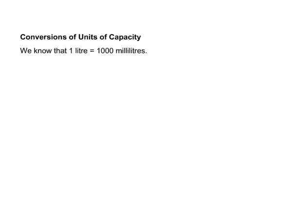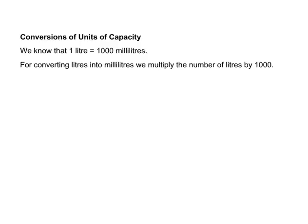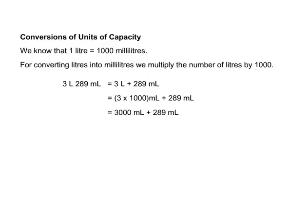Let us convert the units of capacity. We know that 1 liter is equal to 1000 milliliters. For converting liters into milliliters, we multiply the number of liters by 1000. For example, to convert 3 liters 289 milliliters into milliliters, multiply 3 by 1000 to get 3000 ml, then add 289 ml. The answer is 3,289 milliliters.